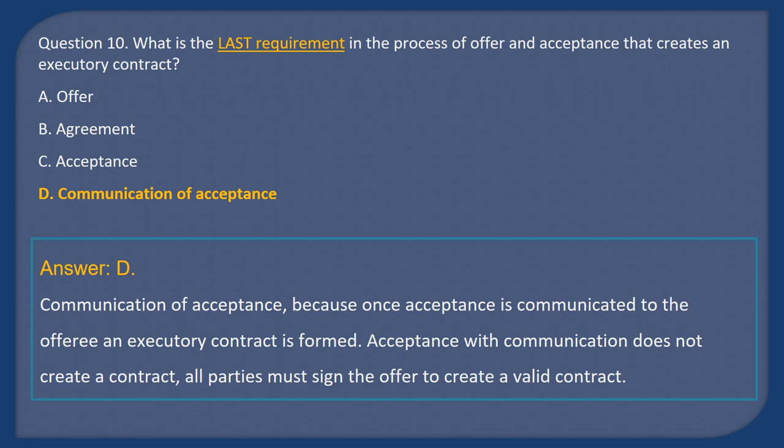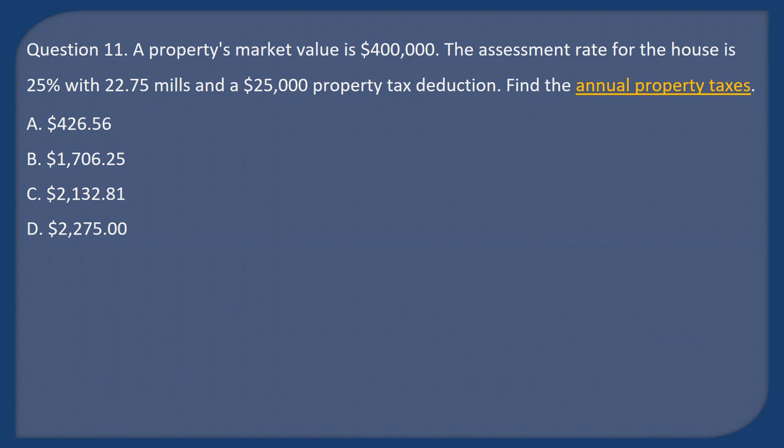Question 11: A property's market value is $400,000. The assessment rate is 25% with 22.75 mills and a $25,000 property tax deduction. Find the annual property taxes. A) $426.56, B) $1,706.25, C) $2,132.81, D) $2,275.00.